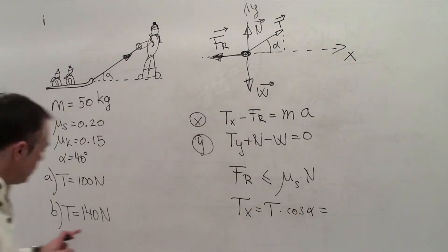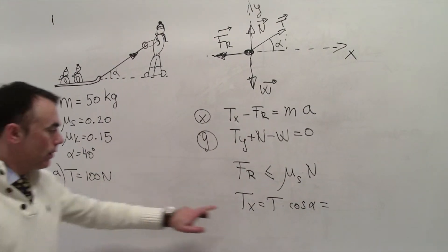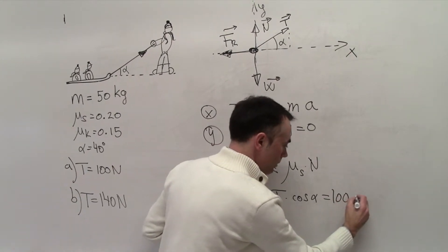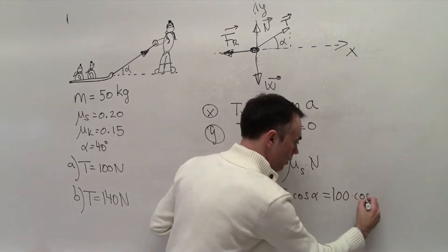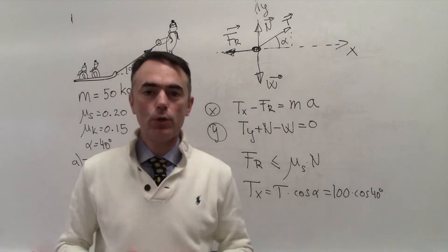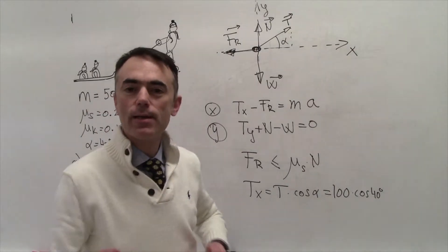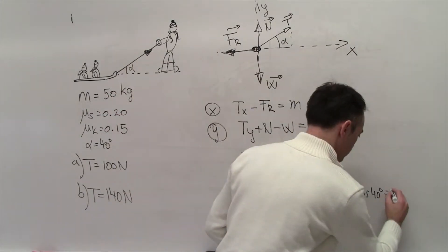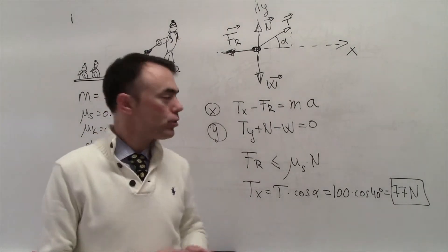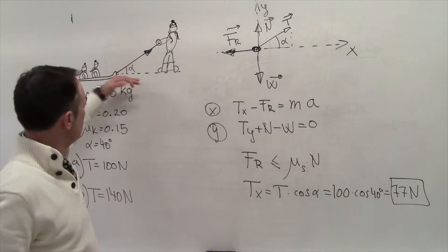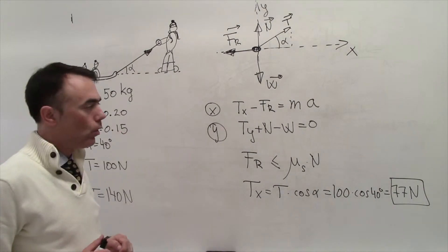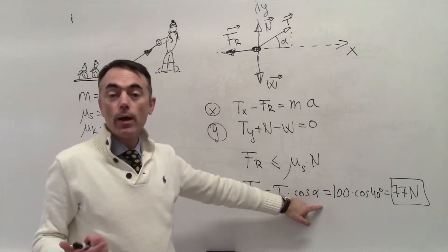For T equals 100 newtons, Tx is 100 times cosine of 40 degrees, which gives 77 newtons. That is the force the adult is exerting in the x-axis via the rope.